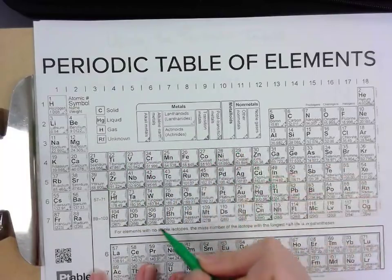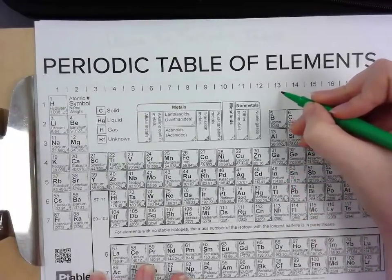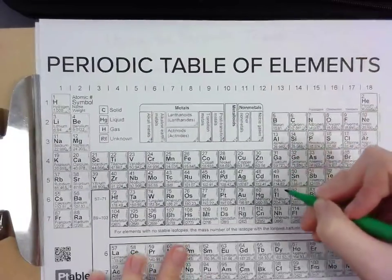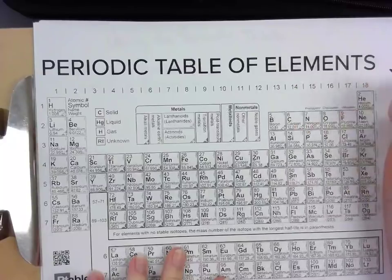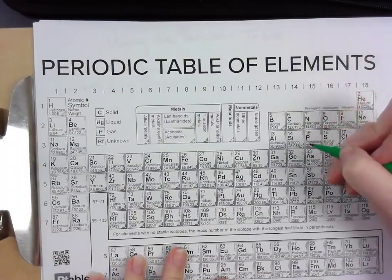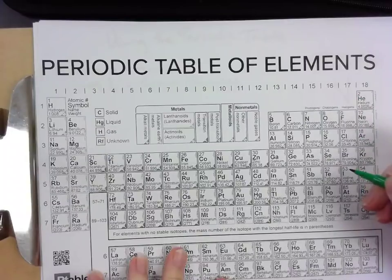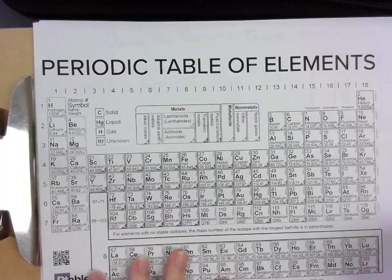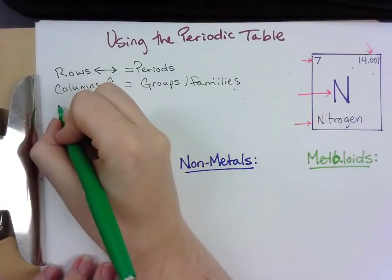We're not going to get into this middle part — these are called the transition metals, we're going to jump over those for now. But if we come over here to group thirteen, thirteen has three valence electrons. Group fourteen has four valence electrons. So you can look at the group number and take away the one, and that tells you how many valence electrons it has. Group fifteen has five, group sixteen has six, group seventeen has seven. And then group eighteen we say has a full shell — it has the maximum, eight valence electrons. So everything from helium down to element 118 has eight valence electrons. Our group numbers tell us the number of valence electrons.